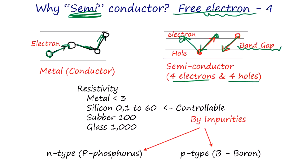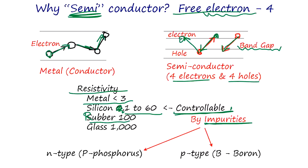This kind of semiconductor is kind of a conductor but not that much. The resistivity - if you look at metal it's less than three; silicon is about one to sixty. It's controllable. Why controllable? Because silicon, if you put impurity in it, it becomes conductive. Rubber is around one hundred, glass is one thousand - these insulators have very high resistivity and don't conduct at all. Silicon sits right in the middle - that's a semiconductor - and the important thing is resistivity is controllable by impurity.